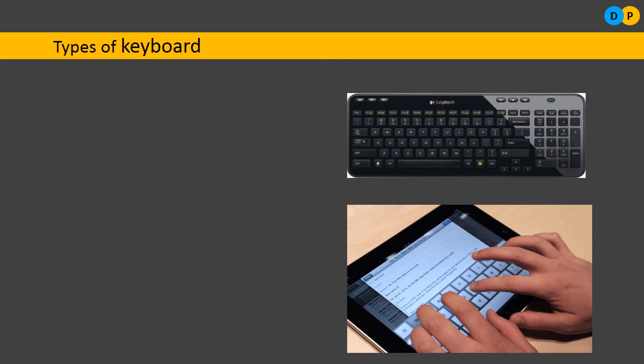There are different types of keyboards available in the market. The choice depends upon the nature of the application and space constraints. The first type is the standard keyboard, which has 105 to 108 keys consisting of alphanumeric keys, special keys, functional keys, arrow keys, and a numeric keypad on the right side.